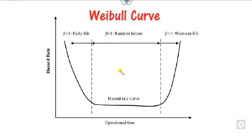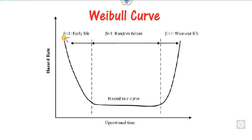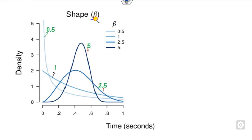We can see this graphically. The values of alpha and beta are both positive. If you set beta less than 1, the hazard rate decreases — this is called early failure. When beta equals 1, the rate is constant. When beta is greater than 1, it is an increasing phase, called the wear-out life process. As the shape parameter increases — for example 0.5, 1, 2.5, then 5 — it defines the shape of the distribution.